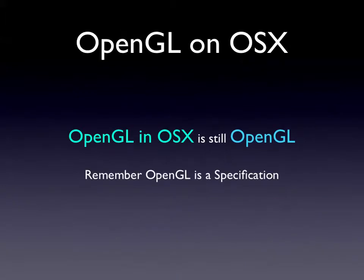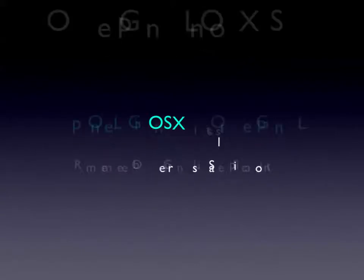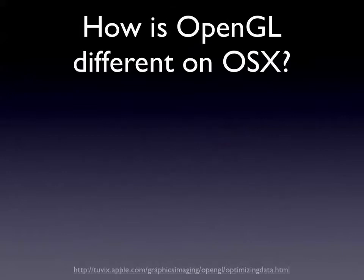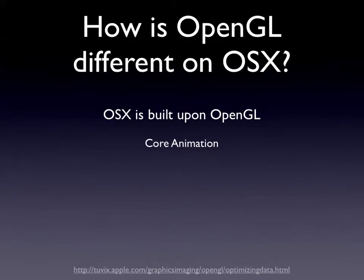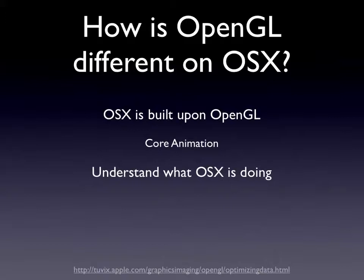OpenGL on OSX is still OpenGL because it's following the spec, just like OSX is Unix. OSX, basically from its core, is written on OpenGL. All the graphics and pretty much everything you see on OSX from quite an early version is using OpenGL. Everything's hardware accelerated and everything's optimized using OpenGL. Core Animation is one of these technologies — everything that is core animation is using OpenGL as far as what it's outputting visually. By using these Cocoa technologies, we can basically take advantage of the hardware on our computers.